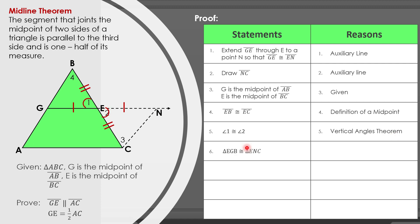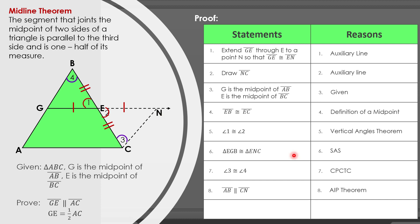For statement 6, triangle EGB is congruent to triangle ENC, by the SAS postulate — since we have side, angle, side on both triangles. Since we proved the two triangles are congruent, statement 7 gives us angle 3 is congruent to angle 4, with the reason being CPCTC — corresponding parts of congruent triangles are congruent. For statement 8, GN is parallel to AC, with the reason being the Alternate Interior Angles theorem.